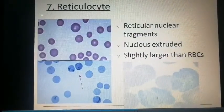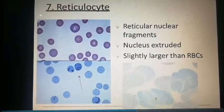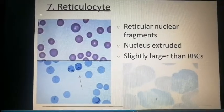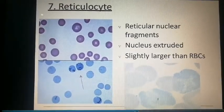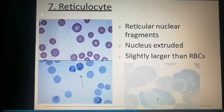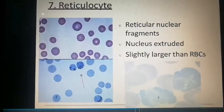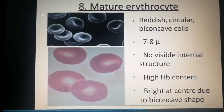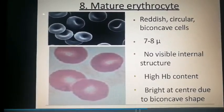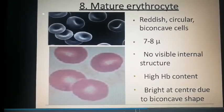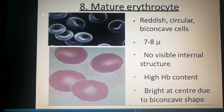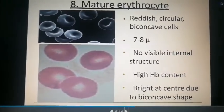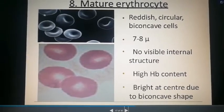The reticulocyte contains reticular nuclear fragments after the nucleus is extruded from the cell membrane, and it is slightly larger than mature red blood cells. The mature erythrocyte is a reddish, circular, biconcave cell of 7 to 8 micrometers with no visible internal structure, high hemoglobin content, and bright at the center due to its biconcave shape.